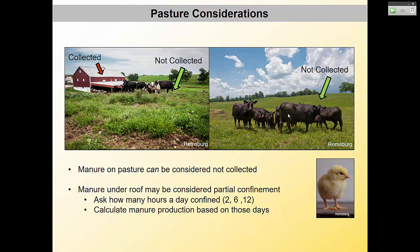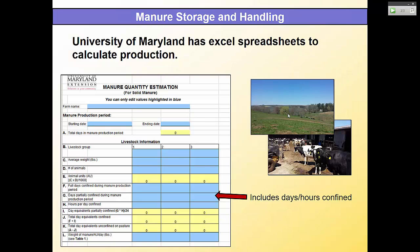Manure under roof may be considered partial confinement. You ask how many hours a day they're confined, then calculate the manure production. You also consider different animal sizes — calves under roof produce a little less manure. There are spreadsheets to help calculate hours per day and manure production. If beef cows are out on pasture all the time, you still report manure produced, but if it's applied directly to pasture it's not as restricted.